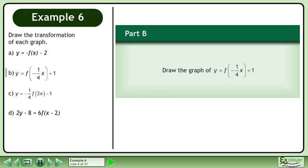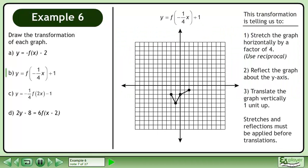In part b, we'll draw the graph of y equals f of negative 1 over 4x plus 1. This transformation is telling us to: 1. Stretch the graph horizontally by a factor of 4, 2. Reflect the graph about the y-axis, and 3. Translate the graph vertically one unit up. Stretches and reflections must be applied before translations.